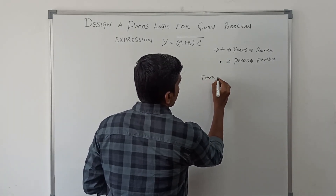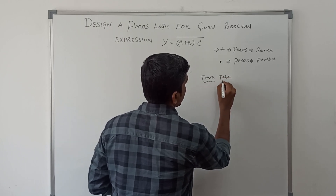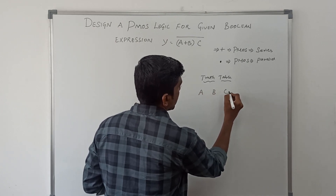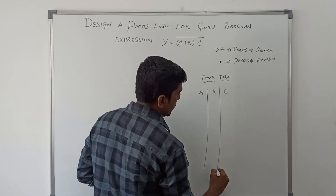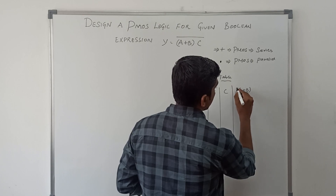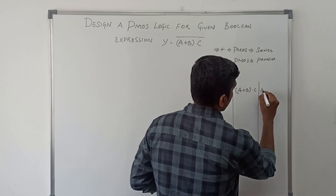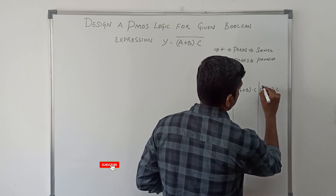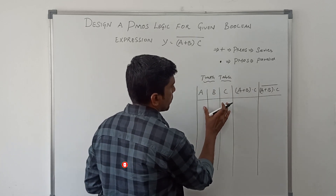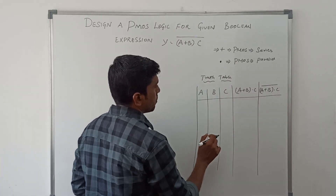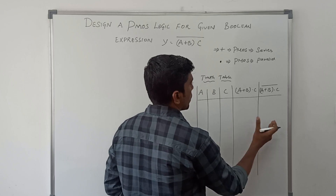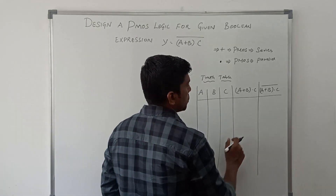Now I will write the truth table for the boolean expression for verifying the result with the PMOS logic. In this boolean expression, there are three variables: A, B, and C. The final output equation is A plus B dot C, whole complement — (A + B·C)'. I will make five columns: the first three columns give the input variables, and the remaining two columns represent the output. To avoid confusion, I make two output columns.